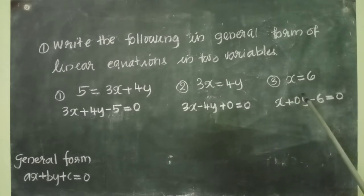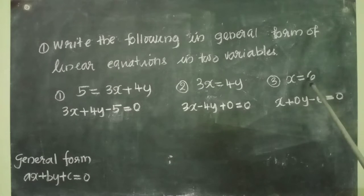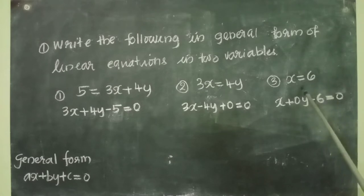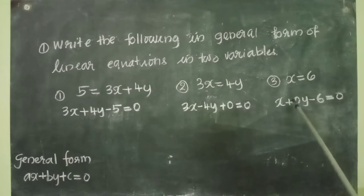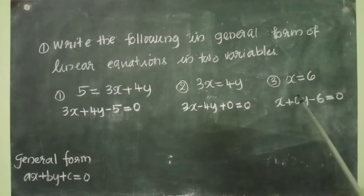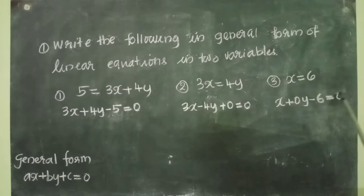Then x equal to 6. Here the x part is there, c part is also there, but the y part is missing. So we can write 0y there, and 6 we can take to the left side also. The answer is x plus 0y minus 6 equal to 0.